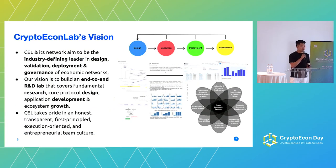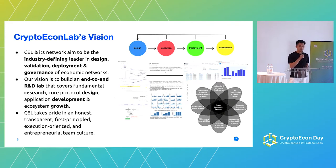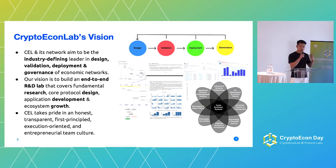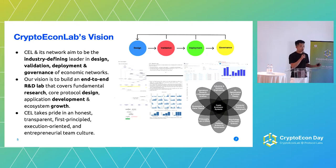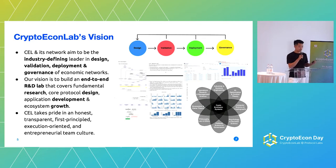At Crypto Econ Lab, we think about all crypto projects and blockchains as economic networks. We define this process of design, validation, deployment, and governance. We need to figure out how to design things, how to know our design is good, how to deploy it, and after deployment, our job is not done — we need to analyze and do analytics to understand how we govern such a living system. We aspire to be the industry-defining leader in this whole process. Our vision is to build an end-to-end R&D lab that goes from research to protocol to product and ecosystem.